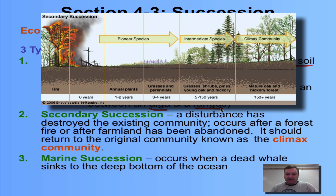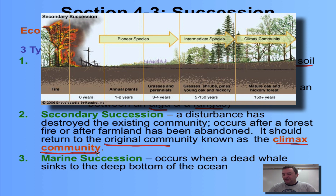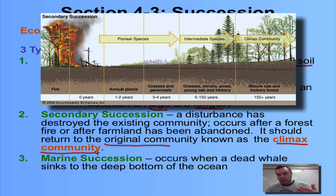In secondary succession, the area will return to its original community, called the climax community. The original community may not come all the way back and will be somewhat altered, but it will be pretty close to the original if nature is left to do its part. The climax community is the final, most prevalent community you'll find there.